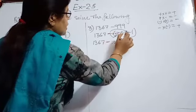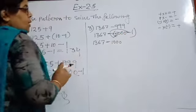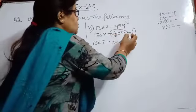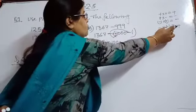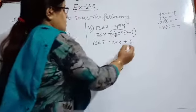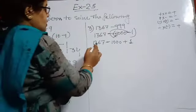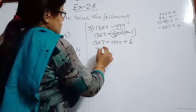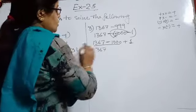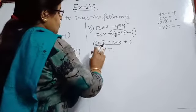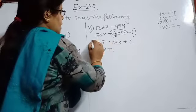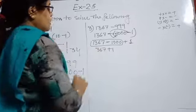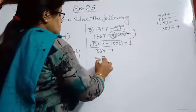Now move this minus sign to the next number along with this one — the sign before it will also be multiplied. Minus into minus becomes plus. So the sign before 1 becomes plus. Now 1367 minus 1000 equals 367, and then plus 1 equals 368.